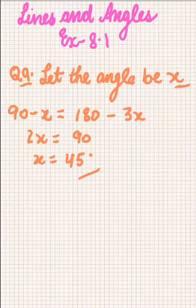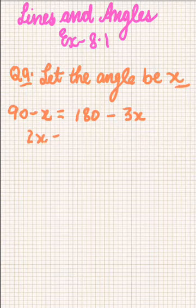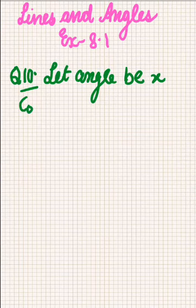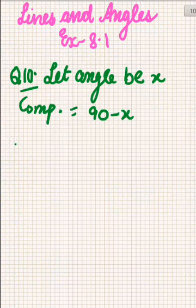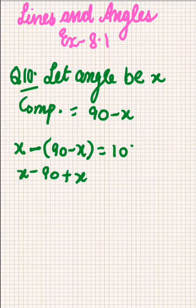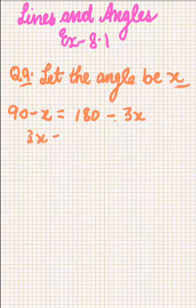Let us solve Question Number 10: if an angle differs from its complement by 10 degrees, find the angle. Let the angle be X. Its complement would be 90 minus X. What we are given is that the difference between the angle and its complement is 10 degrees. So angle minus its complement equals 10 degrees: X minus 90 plus X equals 10, giving 2X equal to 100, and X equals 50 degrees. So 50 degrees is the answer.